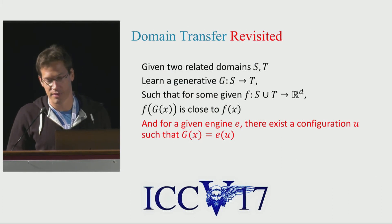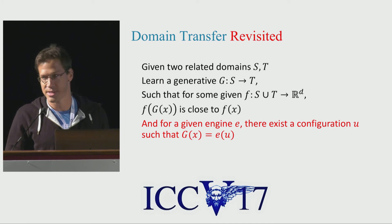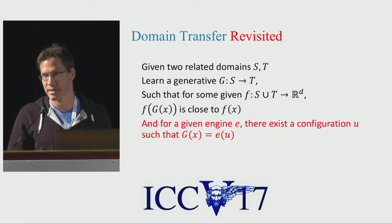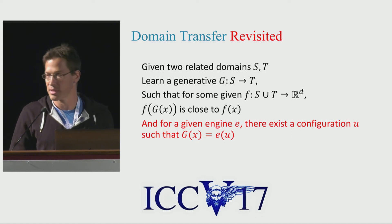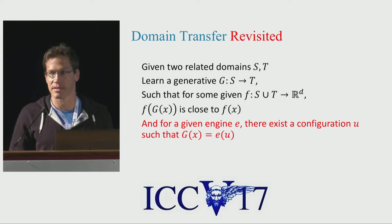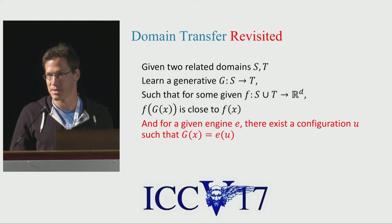Revisiting the problem, we still have two domains and we still recover a network G to map between them. We still want F of the output to be similar to the encoding of the input, but we have an additional constraint: the generated image G of X should be such that there exists a configuration U such that, using the engine E, G of X equals E of U.